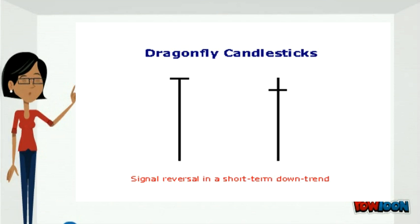The Dragonfly: The Dragonfly occurs when the open and close are near the top of the candlestick and signals reversal after a downtrend. Control has shifted from sellers to buyers.